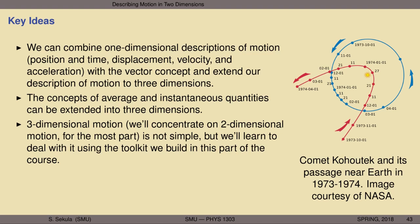Some beautiful examples of motion in at least two dimensions are illustrated in a graphic produced by NASA showing the passage of comet Kahoutek near Earth between 1973 and 1974. The comet's trajectory as it slingshots around the sun is shown in red, while Earth's nearly circular orbit is shown in blue. There were two points of close approach between the comet and Earth — once when it entered the inner solar system and once when it exited.